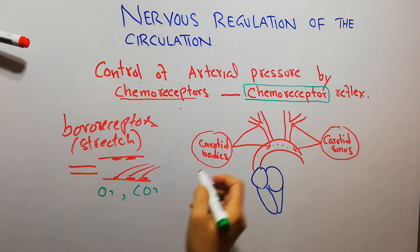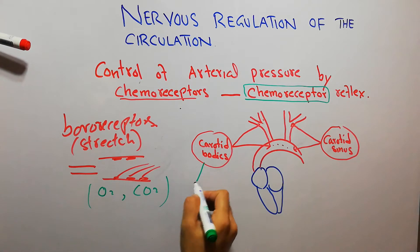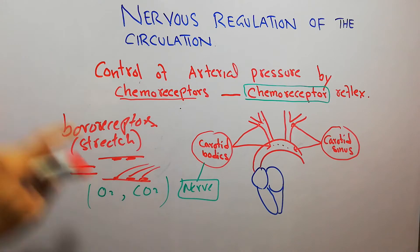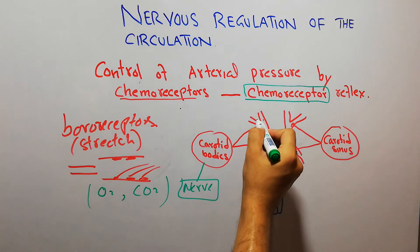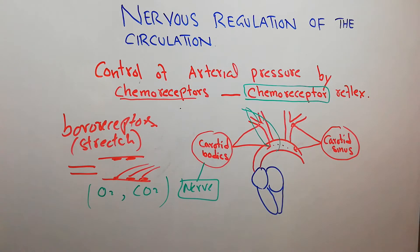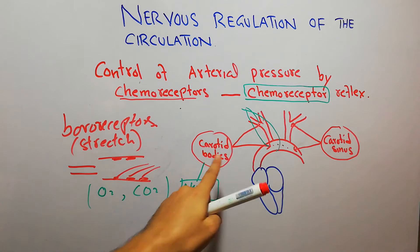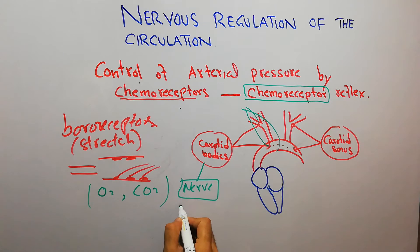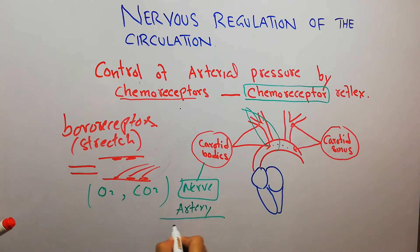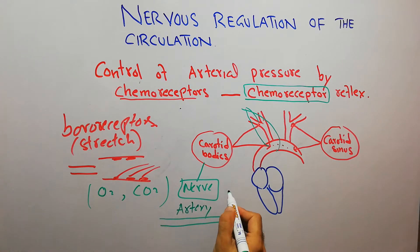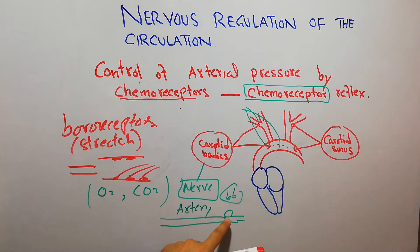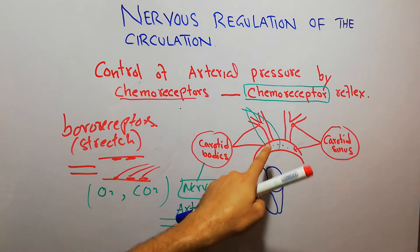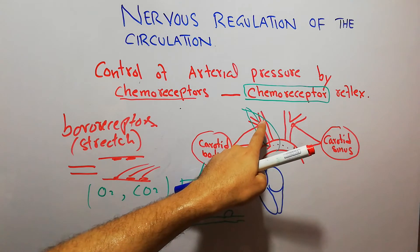These chemoreceptors, just like the baroreceptors, are also supplied by nerves — the same nerves which carry signals from the baroreceptors also carry signals from the chemoreceptors towards the brain. Similarly, these chemoreceptors, which are present in the carotid bodies, are supplied by an artery. That artery brings blood to the chemoreceptors, which function like a lab, continuously testing the level of oxygen and carbon dioxide in the blood coming through that specific artery.